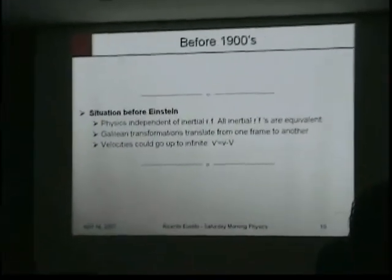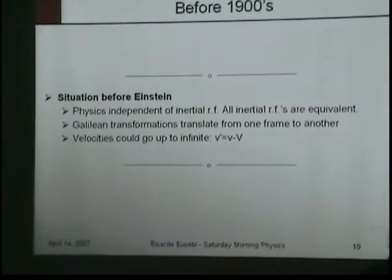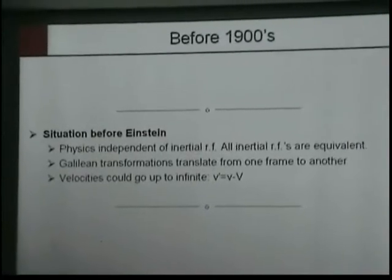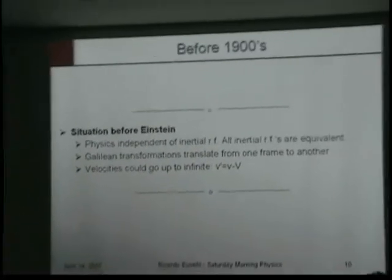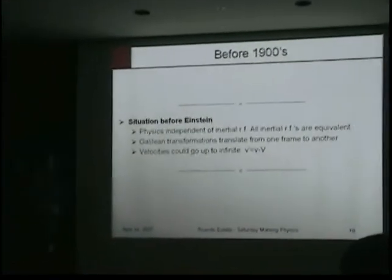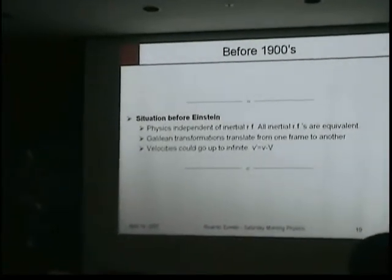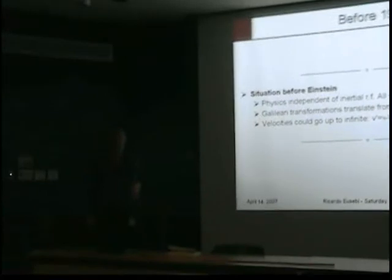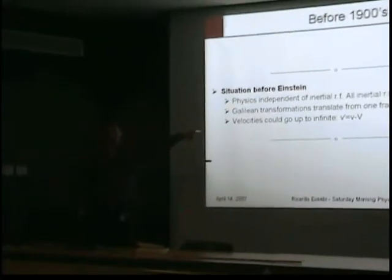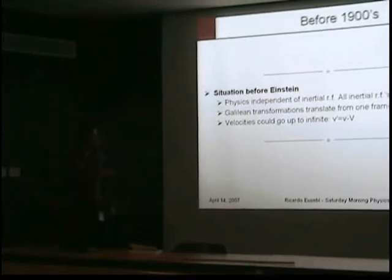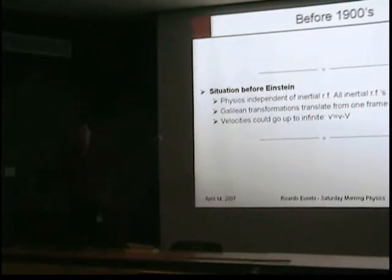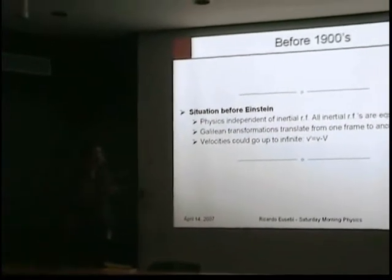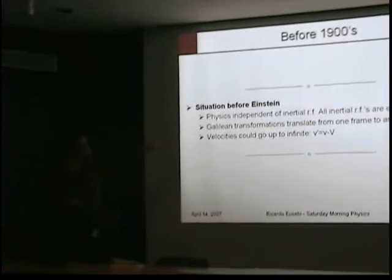This is an example of the physics before 1900. The physics is independent of the inertial reference frame — all inertial reference frames are equivalent, meaning you can use any of them to determine the laws of physics. You get a Galilean transformation from one frame to another, and velocities can go up to infinity. If I go three-quarters the velocity of light in a train and send a ball at three-quarters the velocity of light inside the train, the ball's velocity with respect to the ground would be one and a half times the velocity of light. In principle, you can go all the way to infinity. This is all the physics before Einstein.